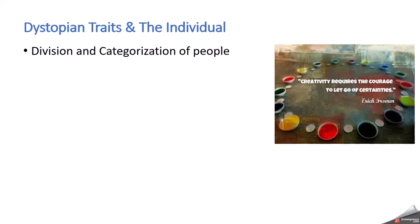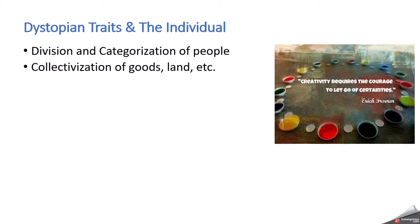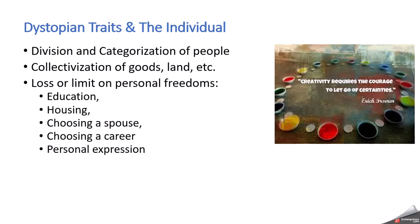Dystopian traits in the individual: a lot of times there will be a division or categorization of people, especially in a society that has too much control. Division of people by labor, by the types of jobs they have, dictated by the government — so there's no real choice. We're going to see this in The Giver as people are assigned their jobs by the government. Collectivization of goods and lands — an extreme form of communism — basically means the government takes all goods that people produce, all the land, and distributes it as they see fit, as happened in communist Russia and other communist countries.